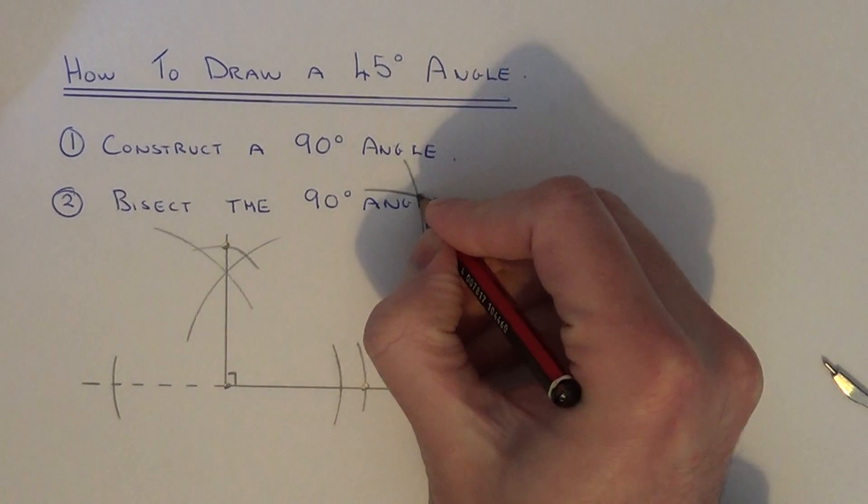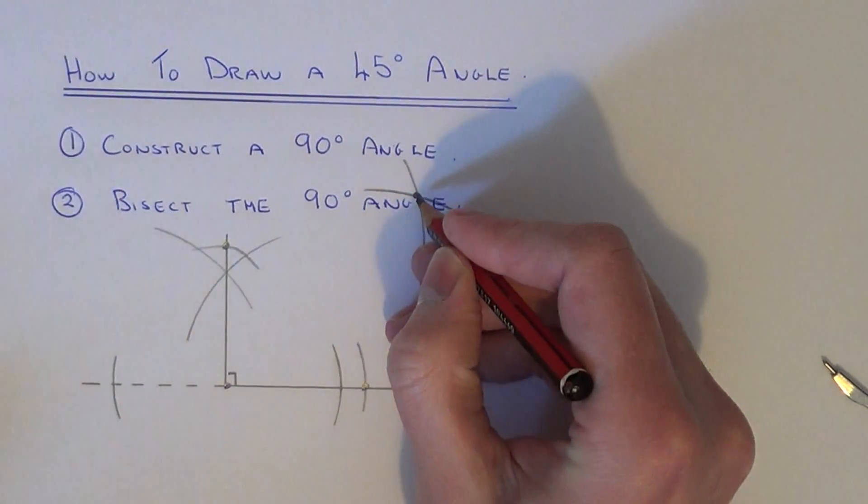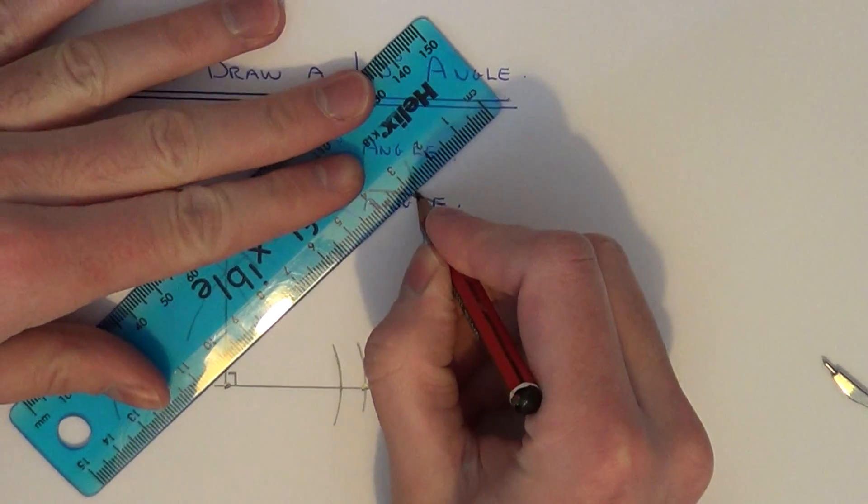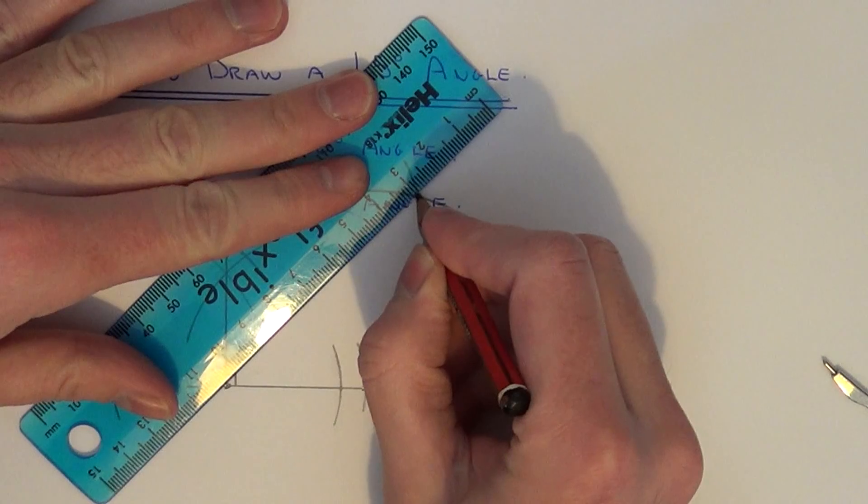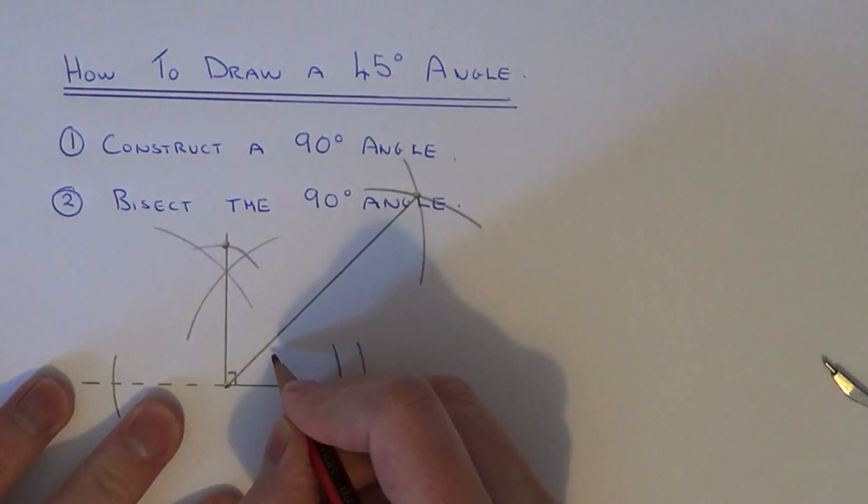We get another intersection here. If you join this point back to the corner, this angle should be 45 degrees.